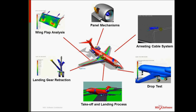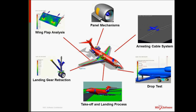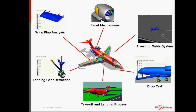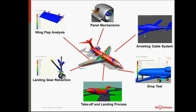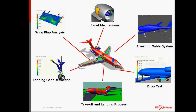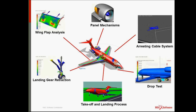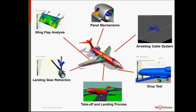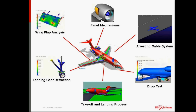Here's a quick overview of how ADAMS is generally applied in the aerospace industry. Engineers use ADAMS for subsystem modeling — like landing gear, wing flap, panel mechanisms, and lock mechanisms — as well as full system analysis like the takeoff and landing process, drop tests for the airplane, or arresting cable systems on aircraft carriers.